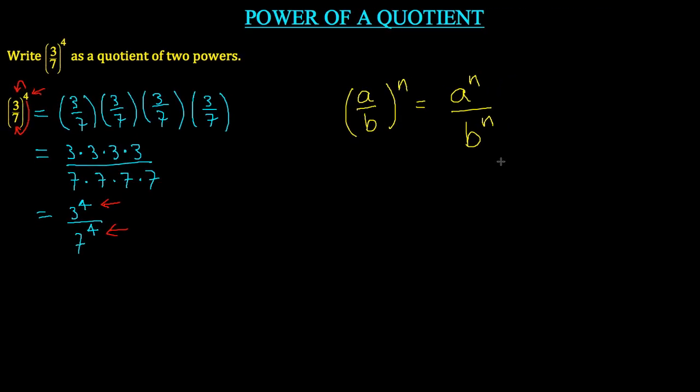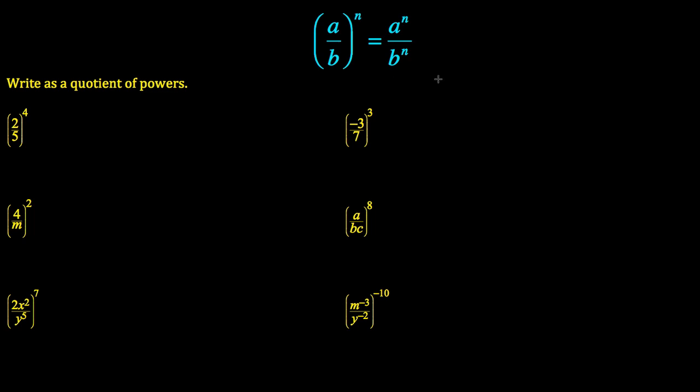Let's try some examples, and we'll be careful because we might need to use a combination of rules at the same time. I've got highlighted at the top here your rule that says A divided by B raised to the exponent N is equal to A to the exponent N divided by B to the exponent N.